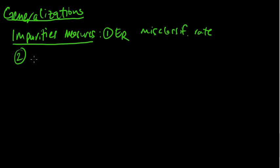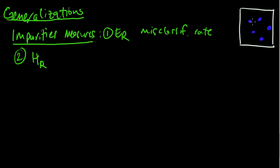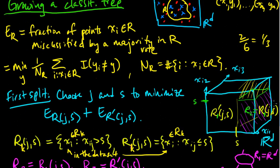Another impurity measure which can be used is the entropy, H sub R. Let me redraw a reference picture: we have some blue points and some red points. For some region R, if we look at the empirical probability distribution on this region — that's this fraction of points — it defines an empirical probability distribution over the classes in this region.